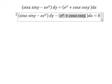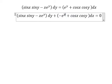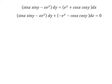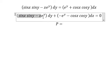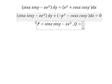Next I will identify P equals to sinx siny minus xe^y and Q equals to negative e^y minus cosx cosy. Because we have dy, we need to find the partial derivative of P with respect to x.